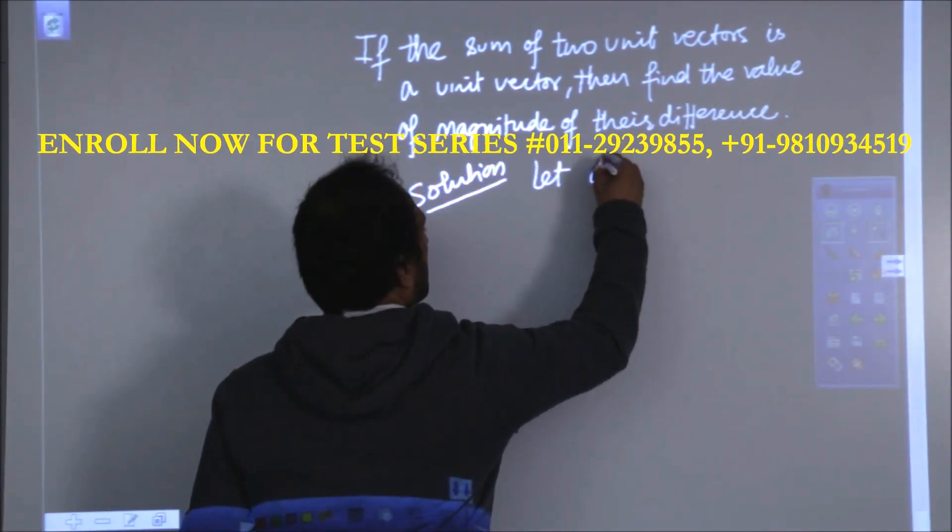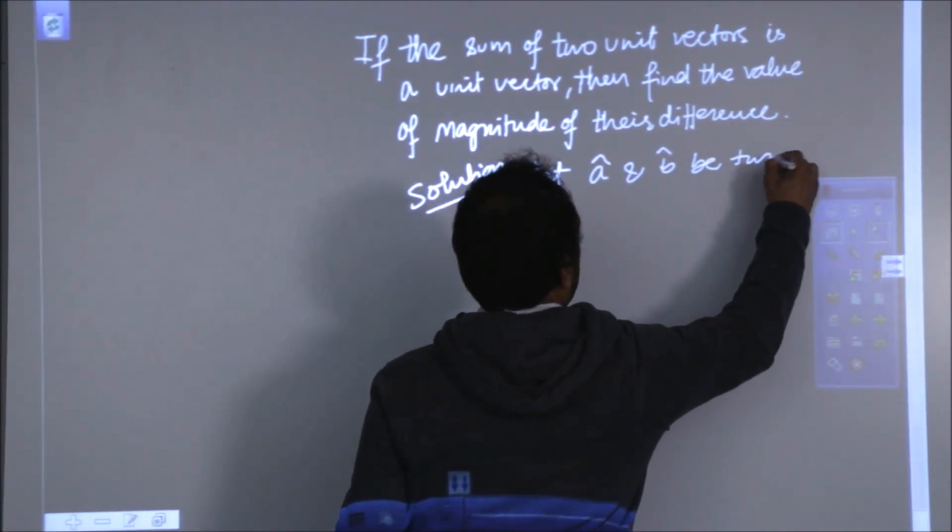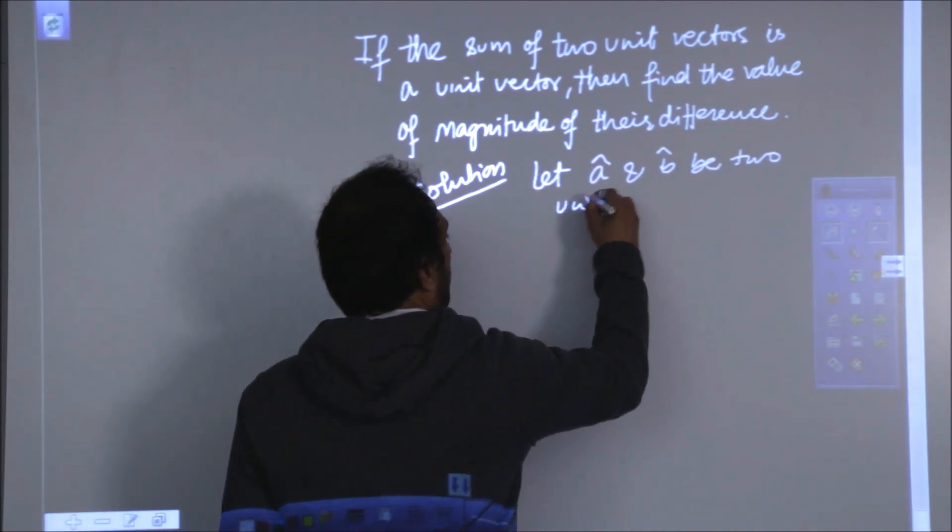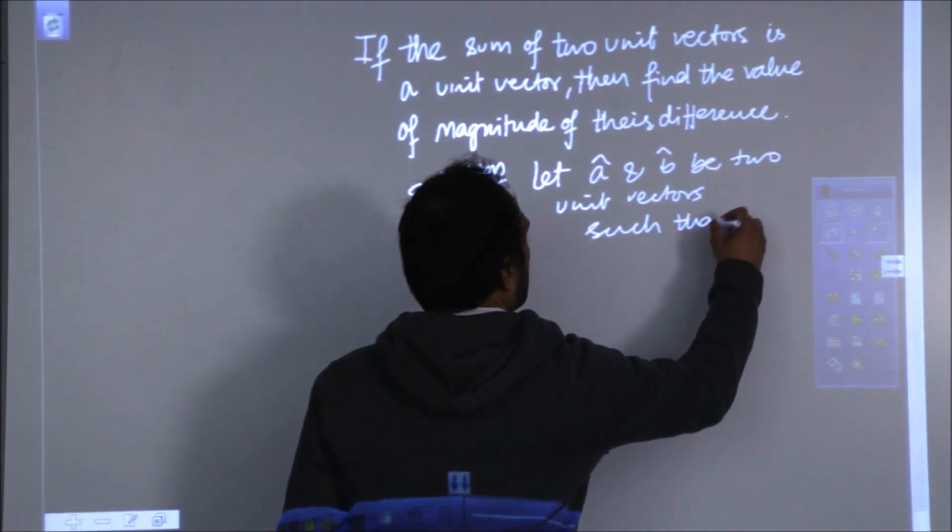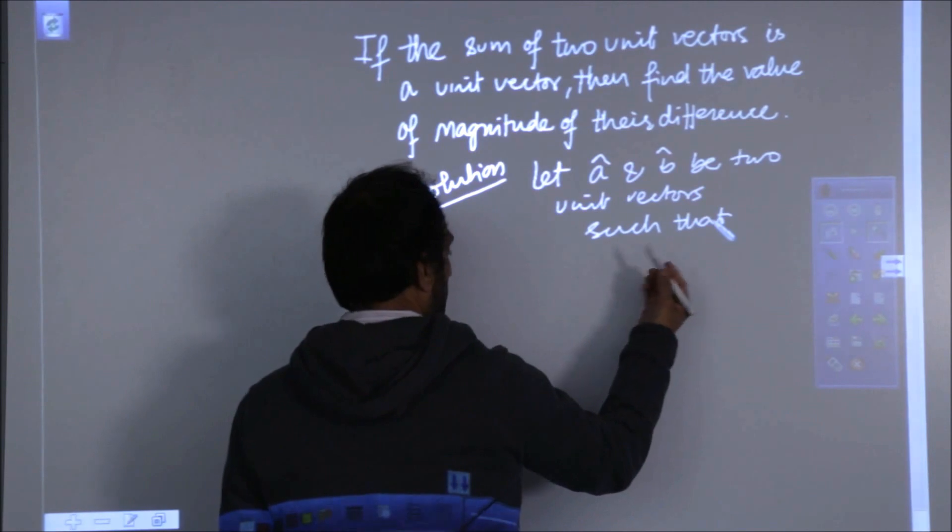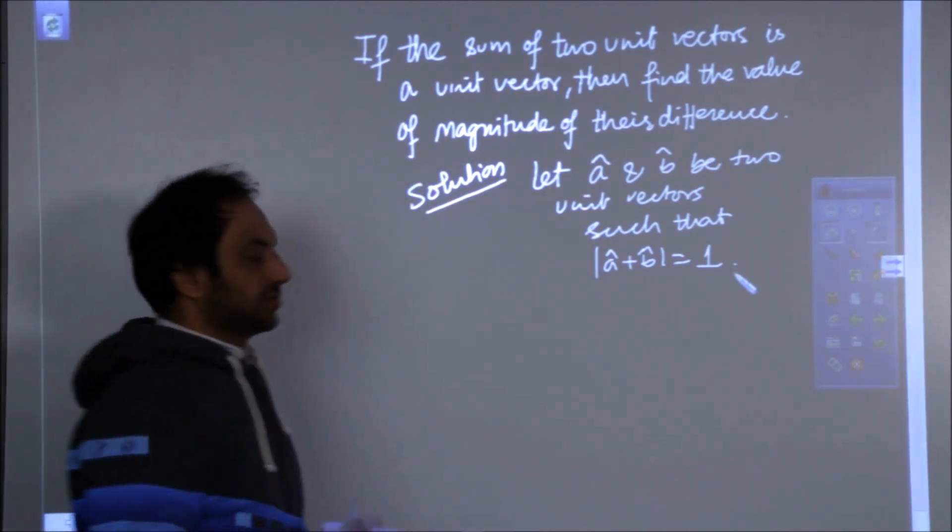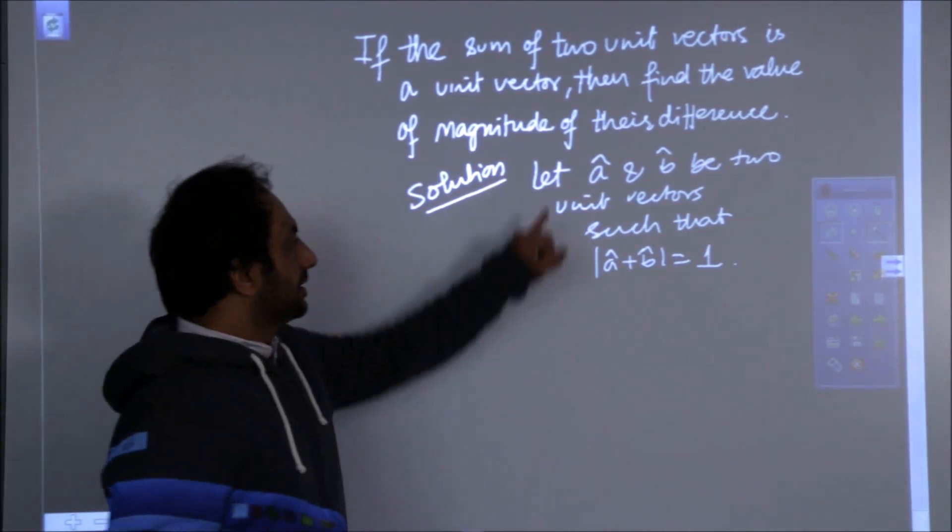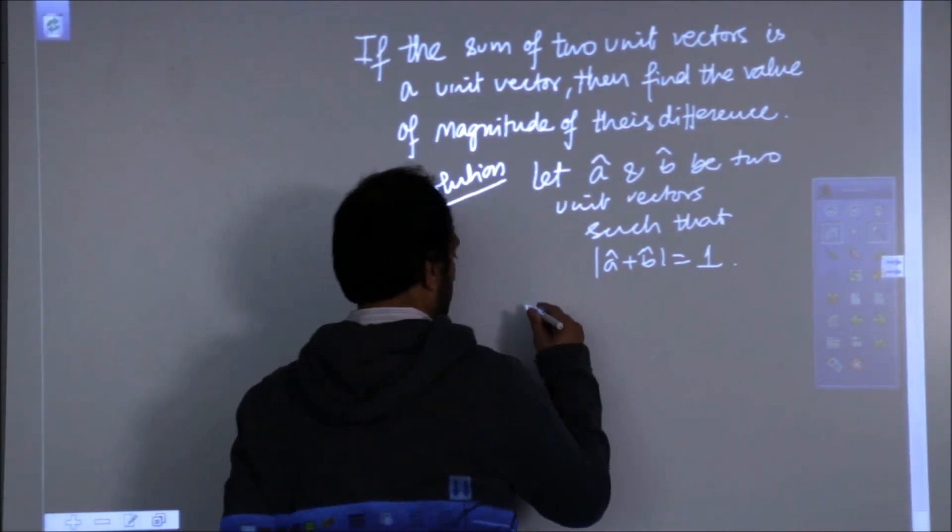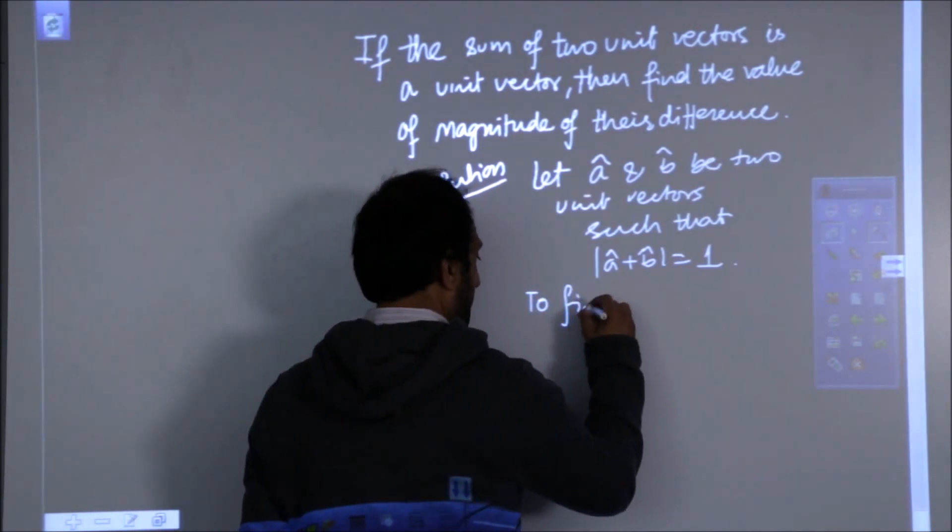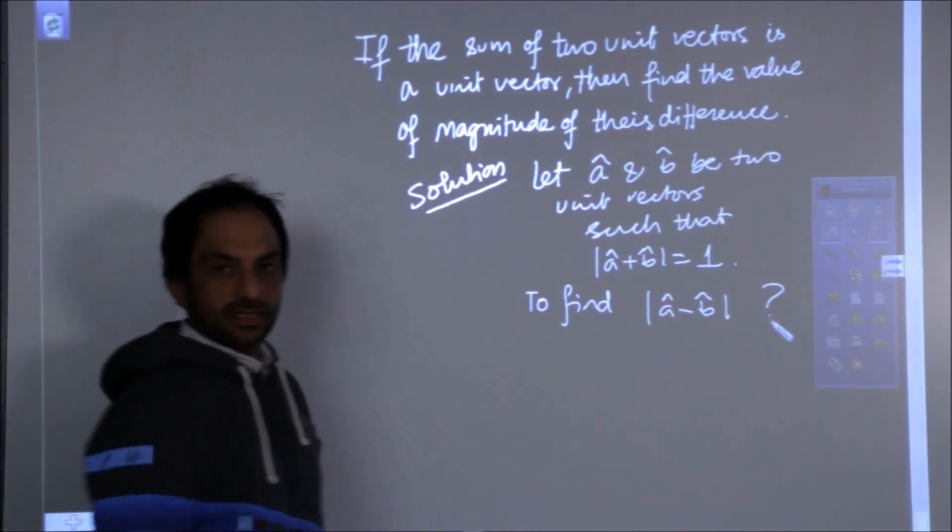Now, let's a cap and b cap be such vectors, be two unit vectors, such that their sum is also a unit vector. So this is the given part of a question that sum of two unit vectors is also a unit vector. And the target is, this is the target.